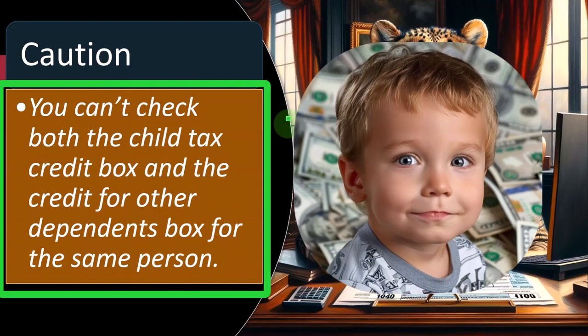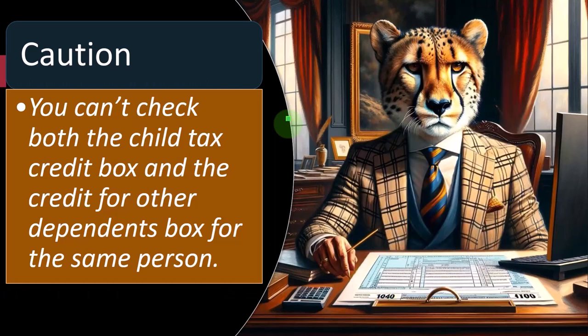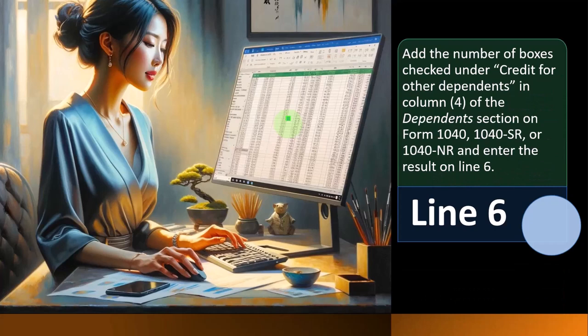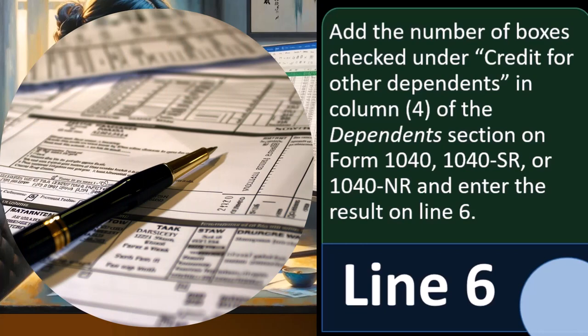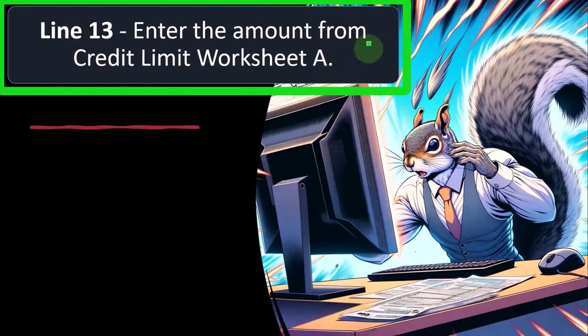Caution: you can't check both the child tax credit box and the credit for other dependents box for the same person. In other words, you can't take both credits for one social security number. That's why in the dependent instructions we check first whether they qualify for the more beneficial child tax credit, and only if not can we take the other dependent credit. Line 6: add the number of boxes checked under 'credit for other dependents' in the dependent section on Form 1040, 1040-SR, or 1040-NR.